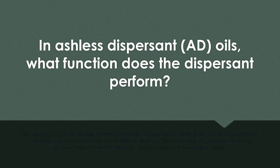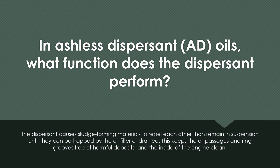In ashless dispersant oil, what function does the dispersant perform? The dispersant causes sludge-forming materials to repel each other, then remain in suspension until they can be trapped by the oil filter or drained. This keeps the oil passages and ring grooves free of harmful deposits and the inside of the engine clean.